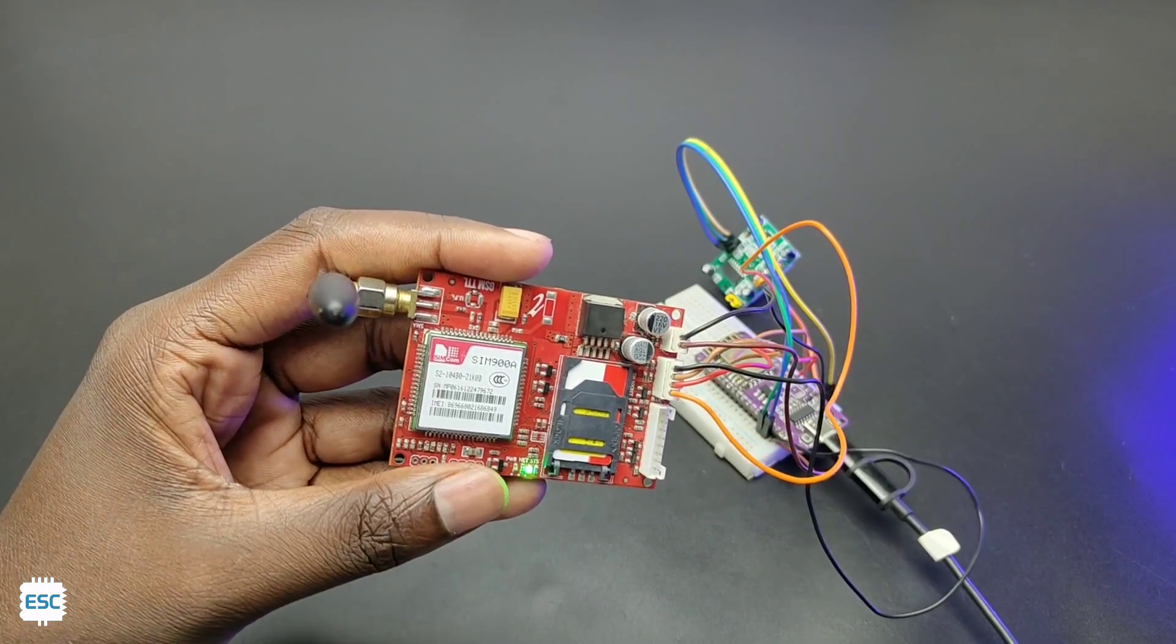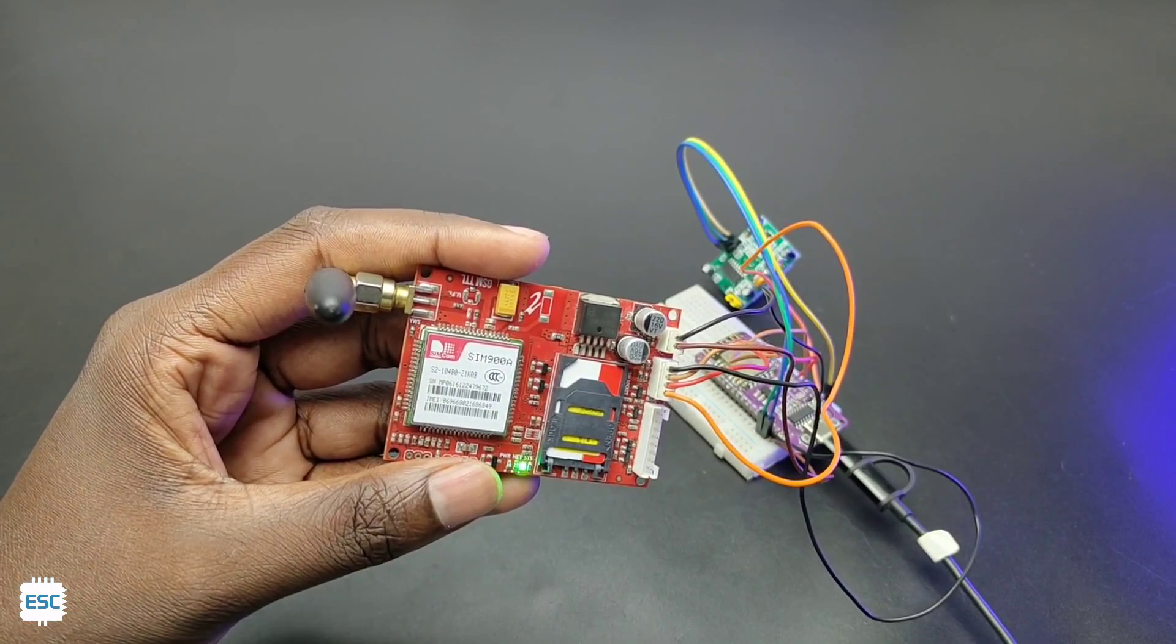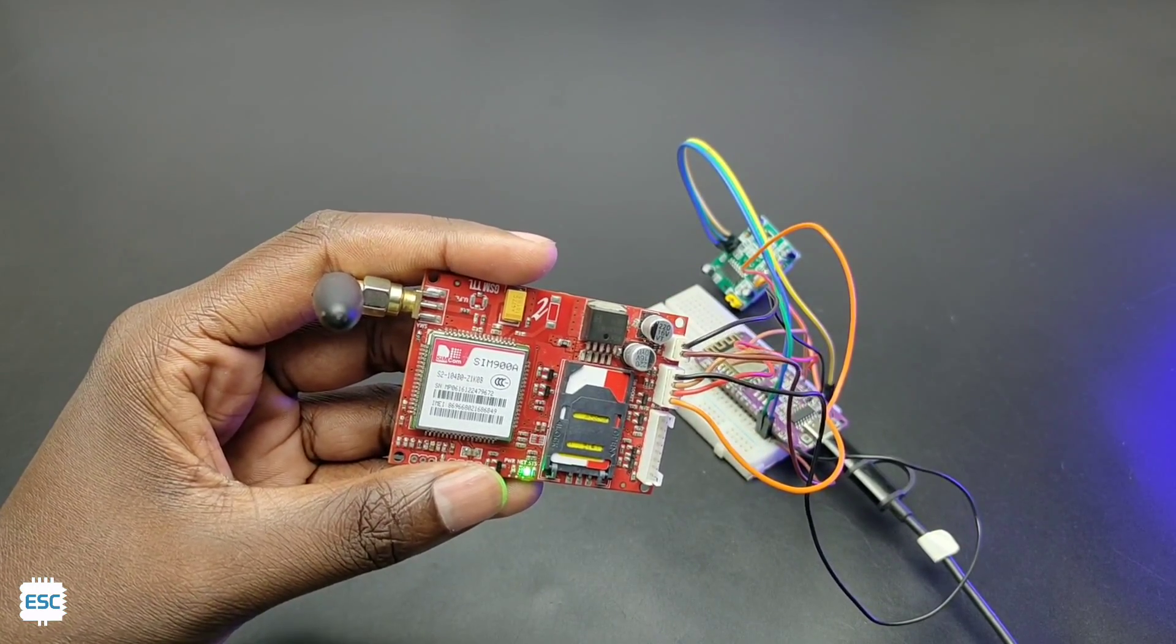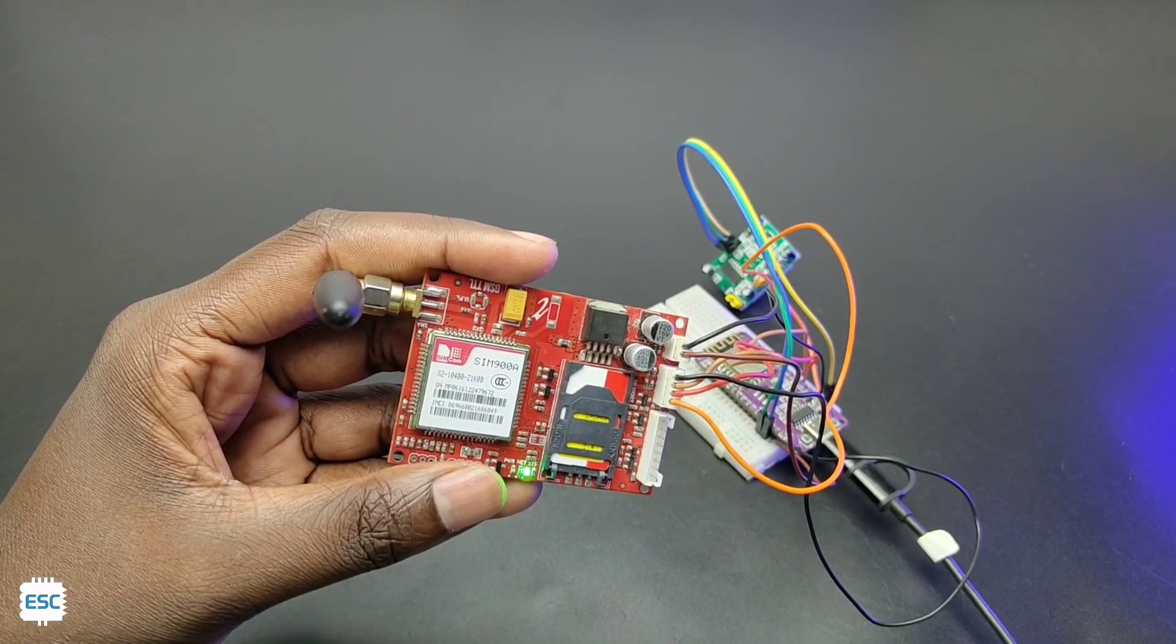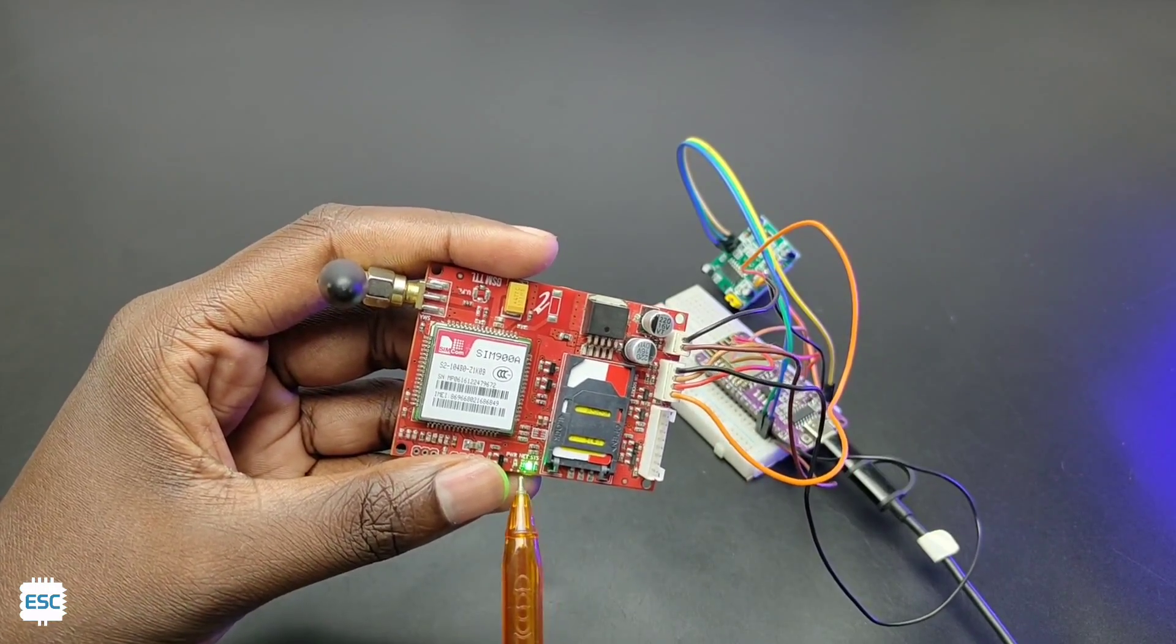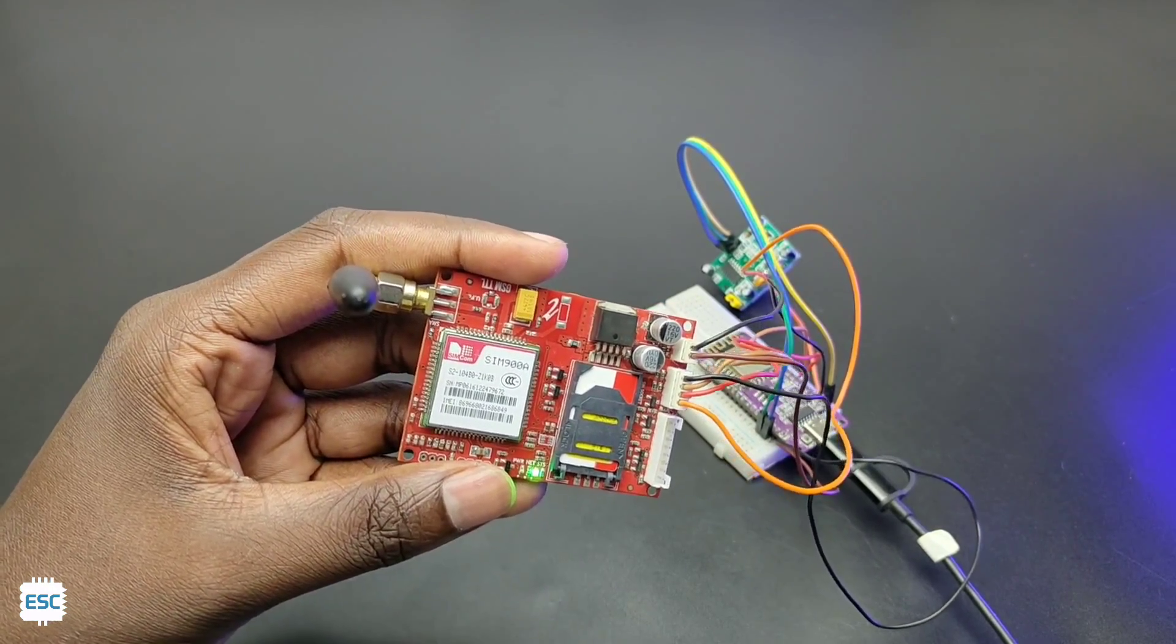At first you can see the status LED of SIM900 module blinks every second. But after connected to a network, it will blink only every 3 seconds. So this way you can identify if the SIM900 module is working or not.